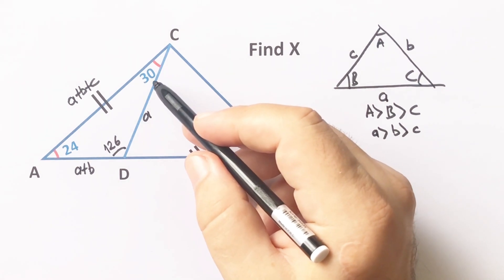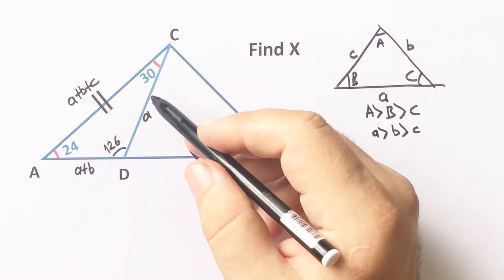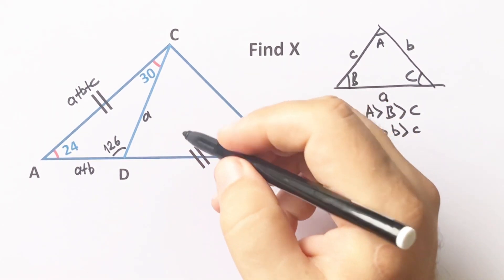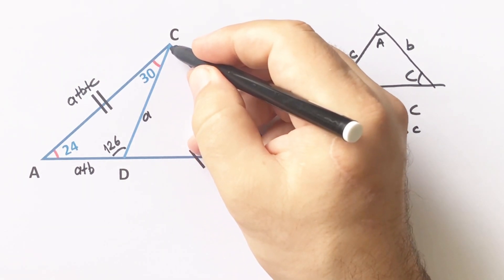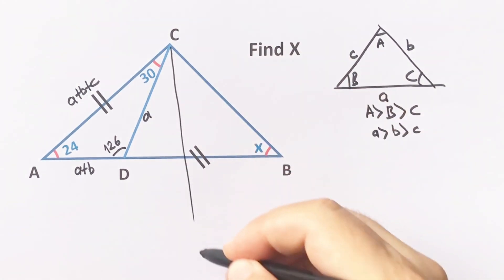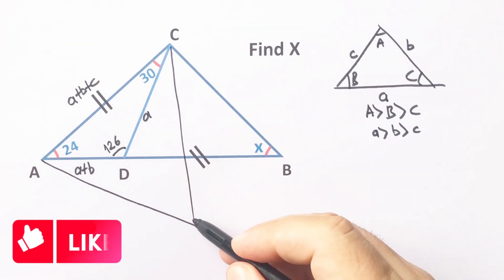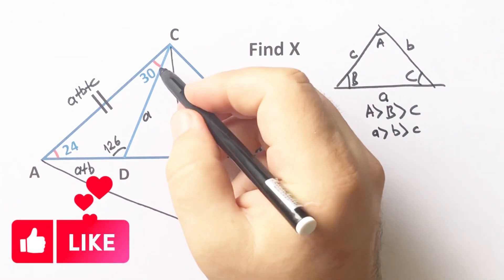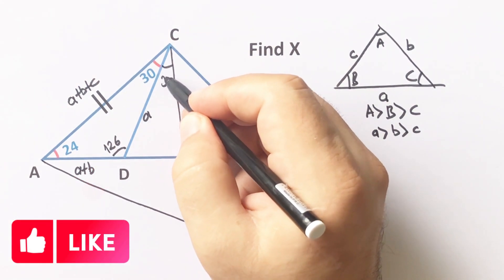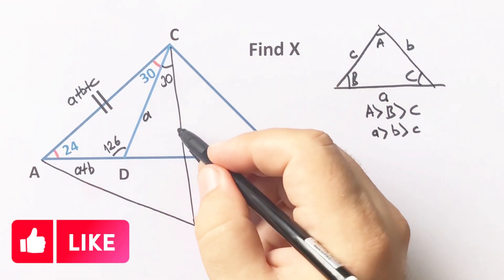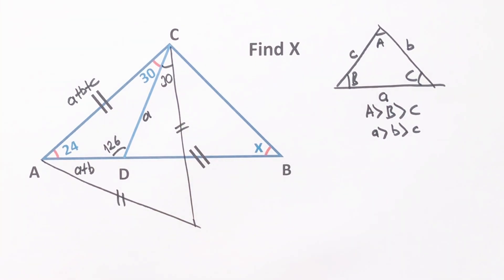So this side is the greatest because it is opposite the greatest angle. Notice that here we have 30 degrees, which is a special angle in geometry. So I want to create an equilateral triangle. This angle must be 30 degrees, and these two lengths are equal.